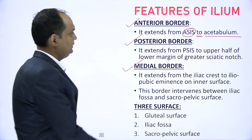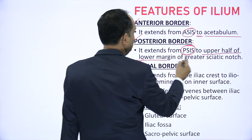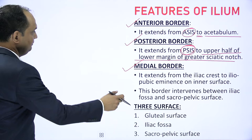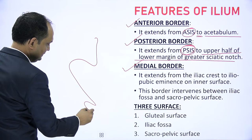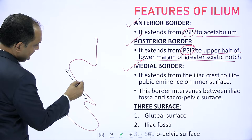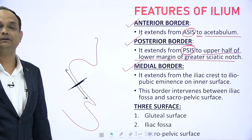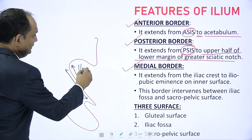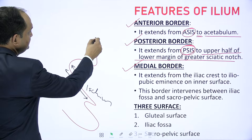The posterior border extends from the posterior superior iliac spine to the upper half of the lower margin of the greater sciatic notch. The greater sciatic notch has contributions from two bones. When you mark the upper and lower half of the border of the greater sciatic notch, the upper part is contributed by the ilium while the lower half is contributed by the ischium.